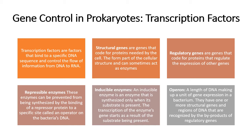If you remember in chapter six, we spoke about DNA replication and protein synthesis. Transcription factors control the copying of DNA to RNA so that we can make proteins. We also have structural genes, which are genes that code for proteins needed by the cell — they form part of the cellular structure and sometimes act as enzymes. We have regulatory genes, which code for proteins that regulate the expression of other genes, ensuring that certain genes are expressed or not expressed depending on the need.